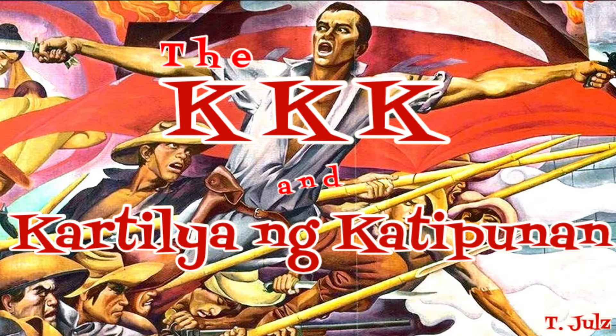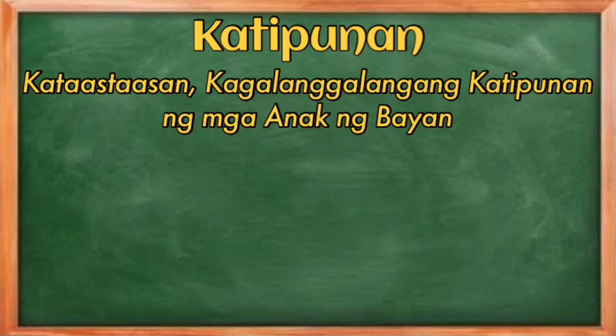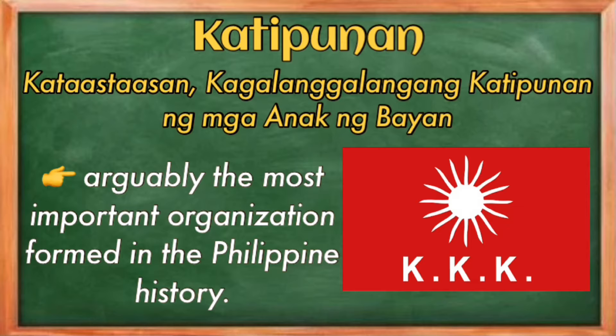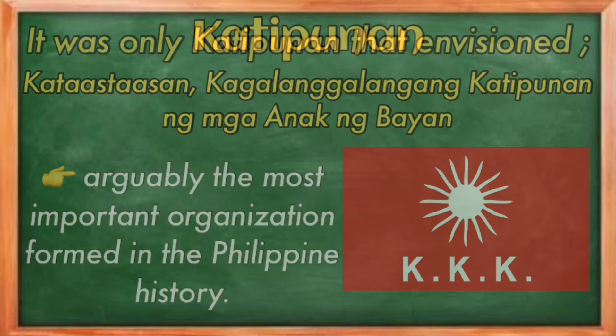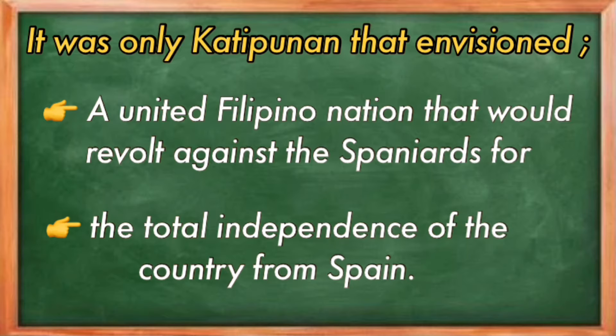The first primary source that we will be studying is the KKK and the Kartilya ng Katipunan. The Katipunan, or the Kataas-taasang Kagalang-galangang Katipunan ng mga Anak ng Bayan, is arguably the most important organization formed in Philippine history. While anti-colonial movements and organizations had already been established centuries prior, it was only this organization that envisioned a united Filipino nation that would revolt against the Spaniards and seek total independence from Spain.